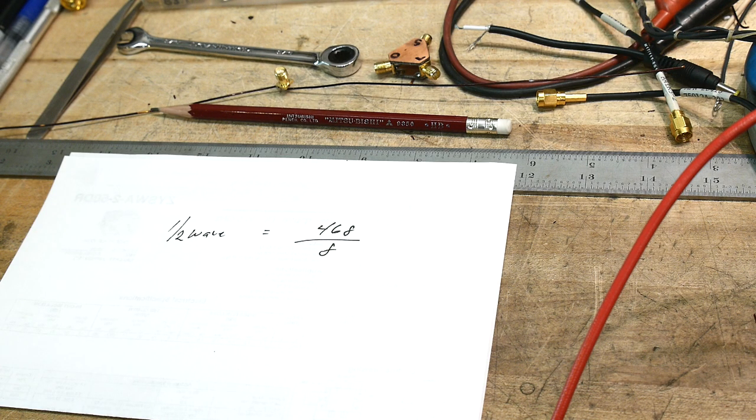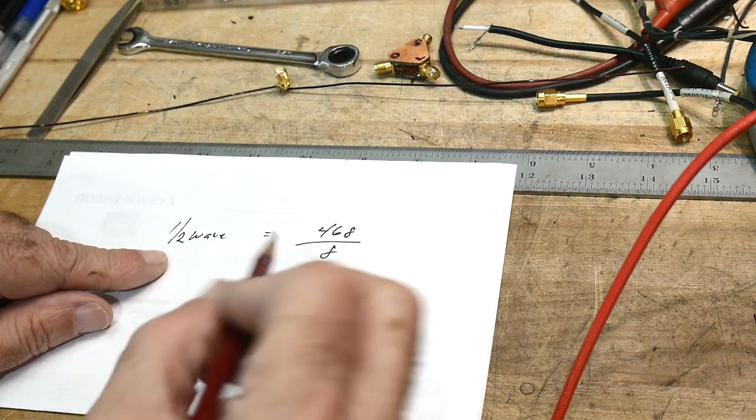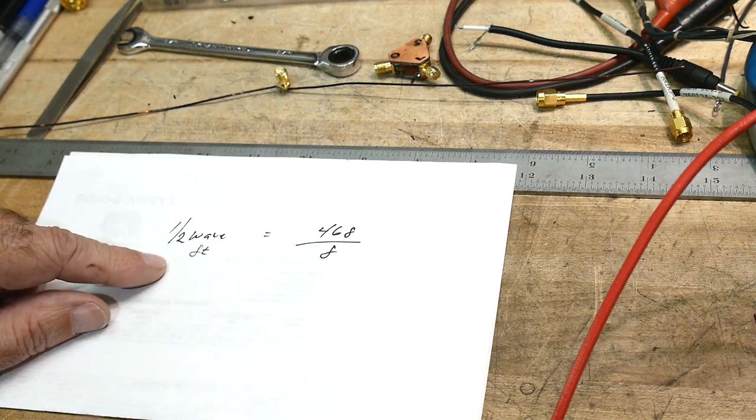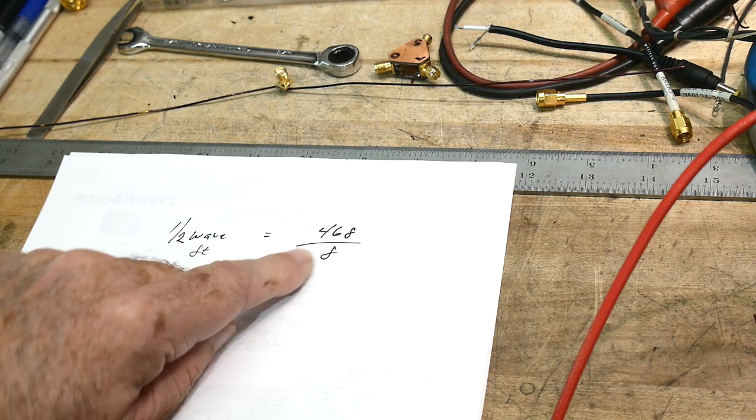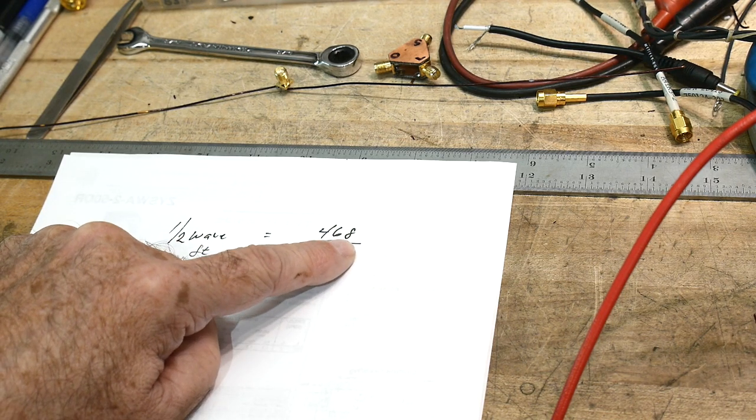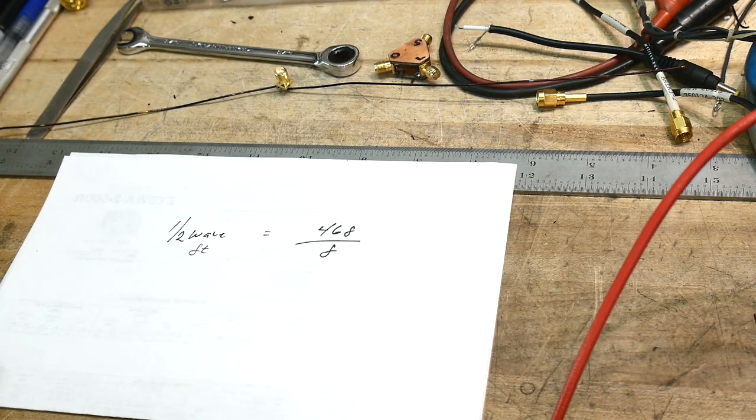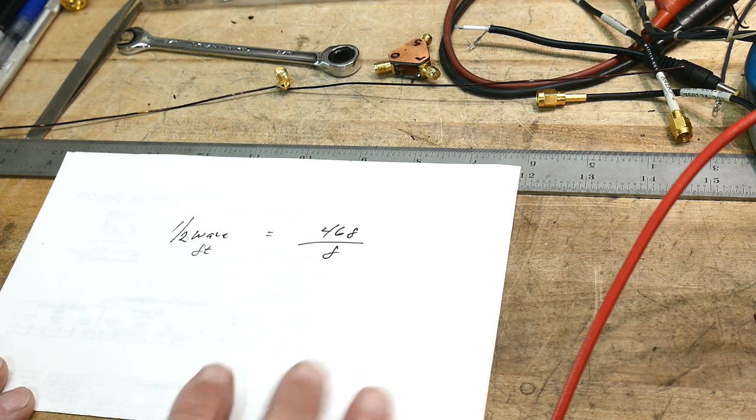Okay, this is going to be about using your nanoVNA to tune your dipole antenna. I think everybody's familiar with this formula. A half wave measured in feet, sorry about my metric viewers, but this is going to be measured in feet. This is equal to 468 divided by the frequency. If you're a metric guy, there's probably another formula that you can use, but we're going to be doing everything in feet and inches in here, sorry.